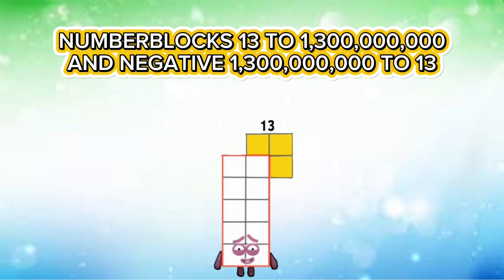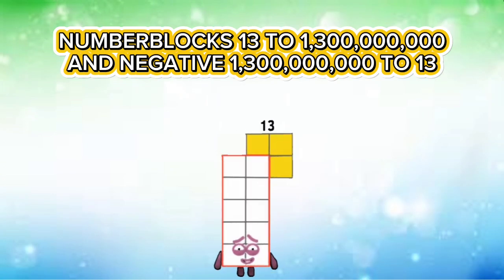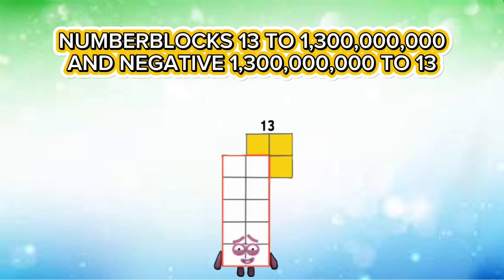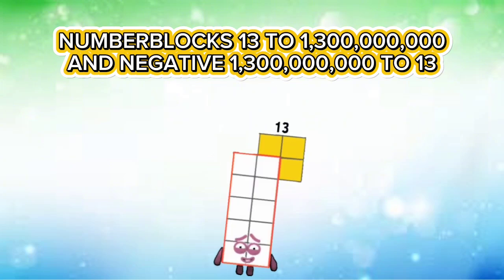Number blocks thirteen to one billion three hundred million, and negative one billion three hundred million to thirteen.